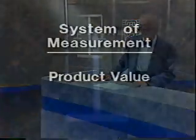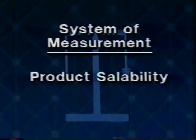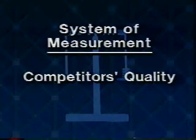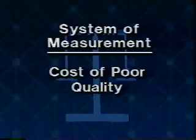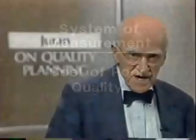In addition, measurement helps us to deal with other quality-related phenomena: product value, salability of product, quality of competing products, cost of attaining quality, cost of poor quality. In those steps of the quality planning journey, product quality is judged by numerous customers, both internal and external. The variety of product features, planning steps, and customers collectively gives rise to a wide variety of units of measure.